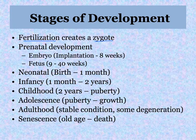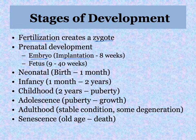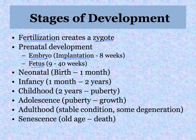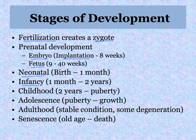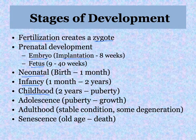In the first eight weeks it is known as an embryo. Once implantation has occurred, we talk about the developing baby as an embryo from implantation to eight weeks, and then it's a fetus from week nine through week 40 at birth. The neonatal time period is from birth through the first month. Infancy is from a month to two years. From age two up until puberty you are in your childhood, and at puberty you enter adolescence.